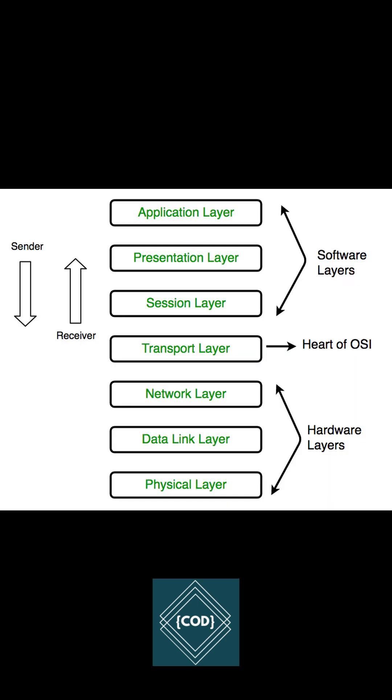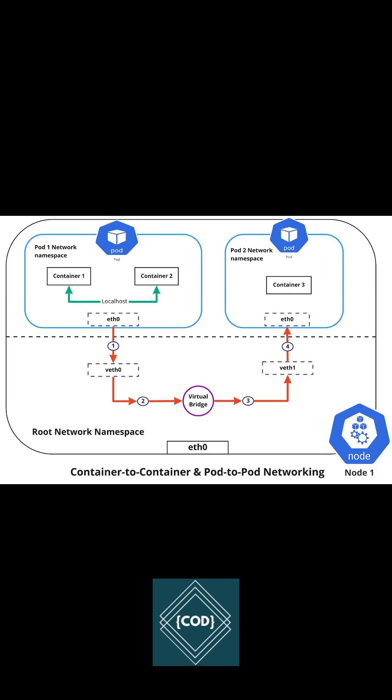Network policies help you to control the traffic flow at the IP address or port level, that is OSI layer 3 or 4, that is the network or transport layer.